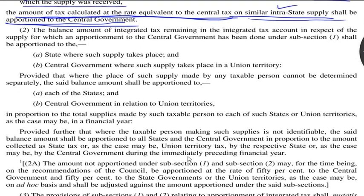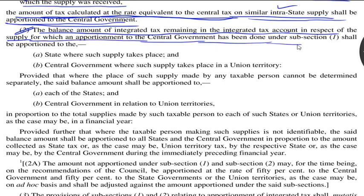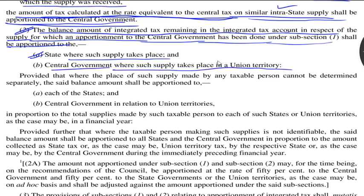Let's see what subsection 2 prescribes. The balance amount of the integrated tax remaining in the integrated tax account in respect of the supply for which apportionment to the central government has been done under subsection 1, shall be apportioned to the state where such supply takes place, or in a union territory. So the balance amount shall be apportioned in this manner.